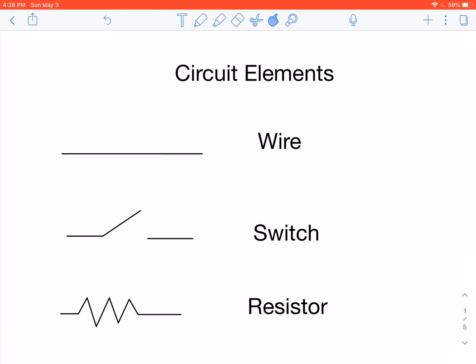Alright, the most basic element of a circuit diagram is a wire. This is just a line that connects more interesting elements of the circuit together. A wire is a conductor that allows some current to flow through it.